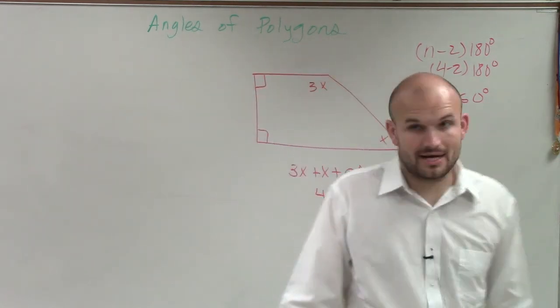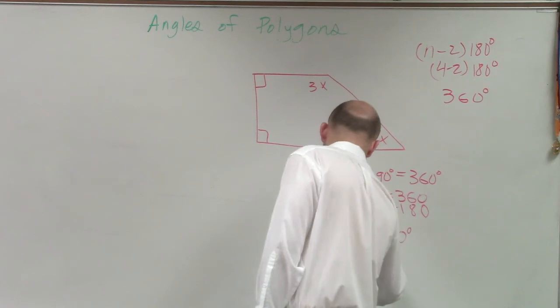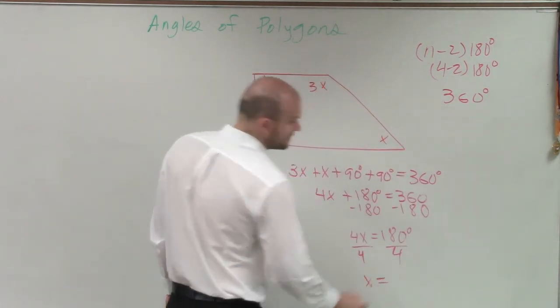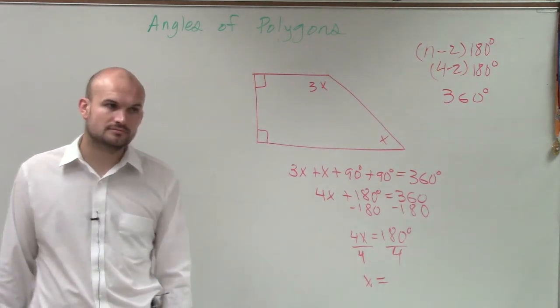So now, I just need to figure out what is going to be x. So I divide by 4. Divide by 4. And x equals 45.